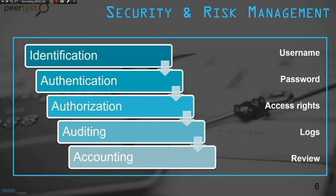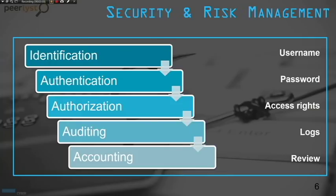Security governance is different from security management — make sure you understand that difference as you may have to address both topics during your exam. The steps to achieve the security principles of integrity, availability, and confidentiality are: identification, authentication, authorization, auditing, and accounting. Identification allows you to identify the requester, for example through a username. Authentication verifies the person through a password. Authorization ensures you have the right access rights. Auditing records all logs.